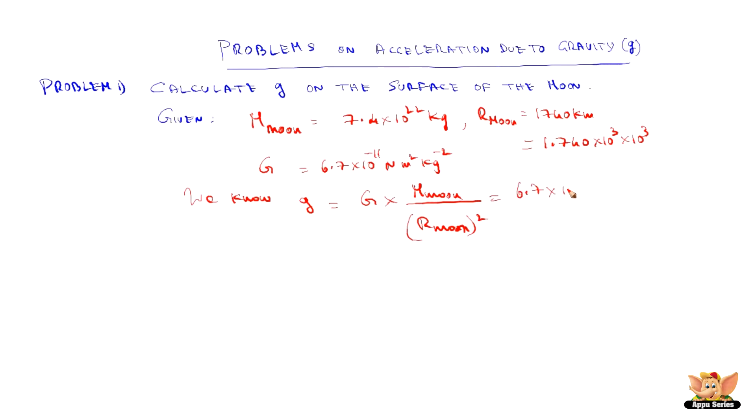On substitution we get 6.7 into 7.4 by 1.744 square into all the 10 to the power powers if we take it out.